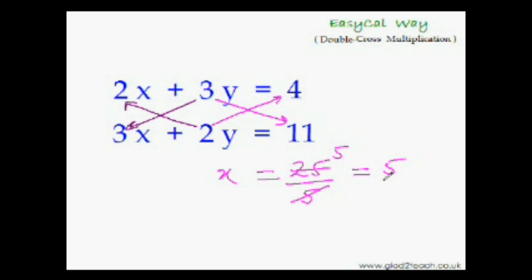So now let us quickly find the value of y as well. Put this value of x in this equation. 2 times 5 is 10. And 10 plus 3y is equal to 4. That means 3y would be equal to 4 minus 10. 4 minus 10 is minus 6. I will put down the step. 4 minus 10 is minus 6. So that means y would be equal to minus 6 divided by 3. That is minus 2. Question solved.